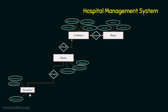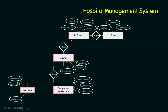Now let's focus on the outpatient. I am going to bring in another entity: outpatient medical information. Every outpatient will have a medical record. The attributes of this entity are outpatient medical ID, patient ID, and medicine name. This outpatient entity is linked to the outpatient medical information with a given relationship. The same outpatient may visit the hospital multiple times for different reasons, so I am maintaining a one-to-many relationship.